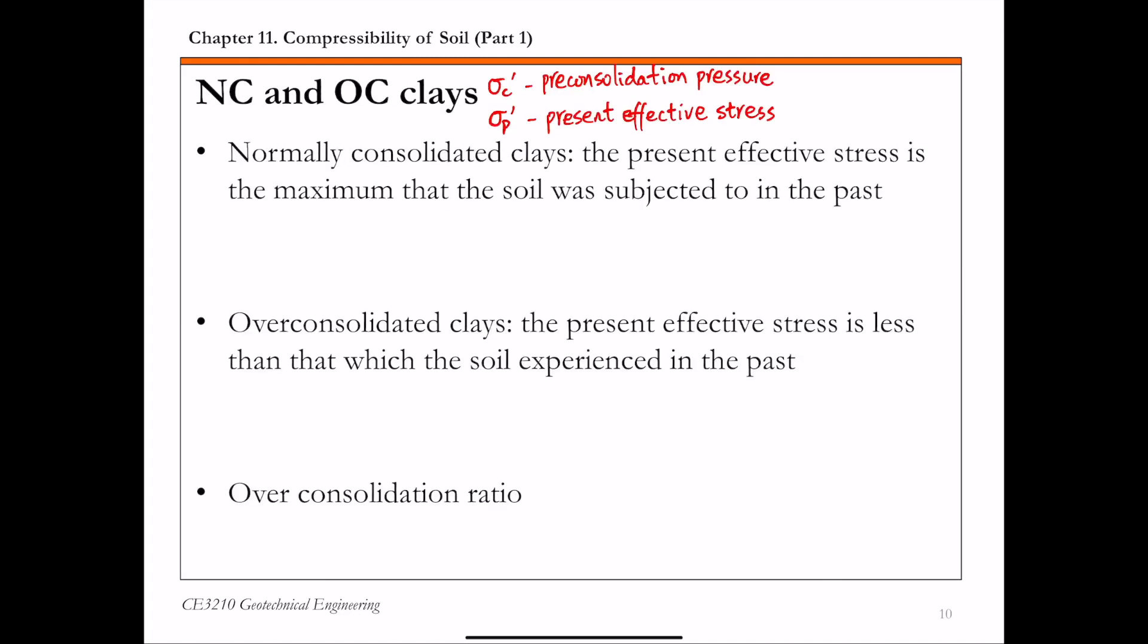We have introduced this concept of pre-consolidation pressure we call sigma c prime, which is basically the maximum effective stress the clay has ever experienced. If we call the present effective stress in the clay sigma p prime, and depending on the relationship between these two stresses, we can classify clay as normally consolidated or overconsolidated. Normally consolidated clays have sigma p prime equal to sigma c prime, so basically your present effective stress is the maximum the clay has ever experienced.